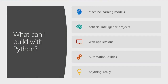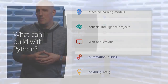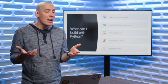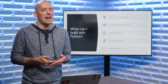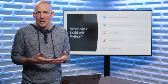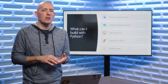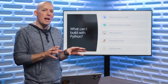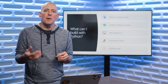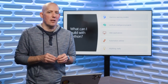So the last question is: what can I build with Python? The answer is pretty much anything — machine learning models, AI projects, web applications, which is personally what I find myself using Python most frequently for, automation utilities, and really pretty much anything at all. That's the great power of Python: its flexibility and its ability to grow with you. So now that you know a little bit about Python, we'll close off here and in the next video we'll talk about what you're going to need to start writing your Python code.